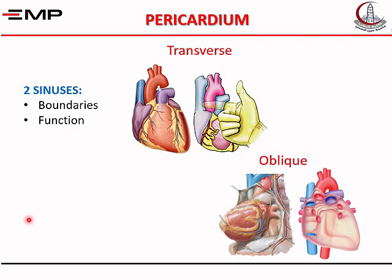The second sinus is the oblique sinus of pericardium. It is a part of the pericardial cavity hidden behind the heart. It is limited on each side by two pulmonary veins — the two left and the two right pulmonary veins. On the right side also, we have the inferior vena cava. Above, there is reflection of the parietal pericardium to the back of the heart. Below, it communicates with the rest of the pericardial cavity.